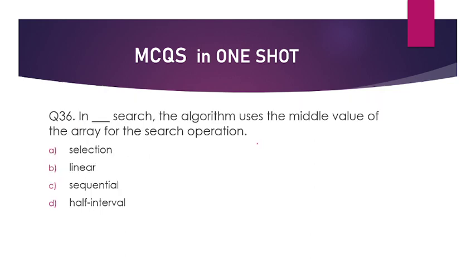In dash search, the algorithm uses the middle value of the array for the search operation — selection, linear, sequential, or half interval? The answer is binary search. Binary search is also called half interval search.